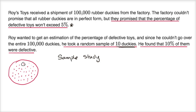In future videos, we'll talk about how you can estimate the probability, or how you can figure out whether your sample seems sufficient. But for this one, for what Roy did, I don't think 10 duckies is enough. If he sampled maybe 100 duckies or more and found that 10% of them were defective, well, that seems less likely to happen just purely due to chance. Let's do a few more of these — I'll do those in the next videos.